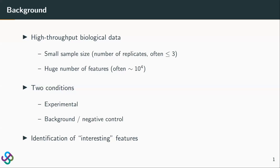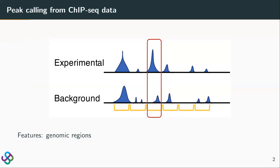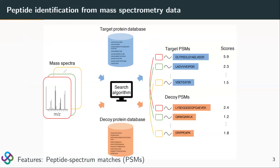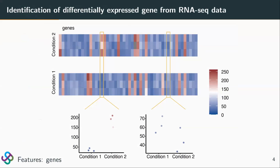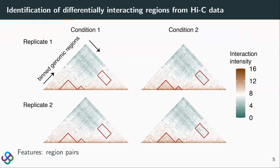Clipper aims to identify interesting features. Here are four example analyses: peak calling from ChIP-seq data where features are genomic regions; peptide identification from mass spectrometry data where features are peptide spectrum matches; identification of differentially expressed genes from RNA-seq data where features are genes; and identification of differentially interacting regions from Hi-C data where features are region pairs.